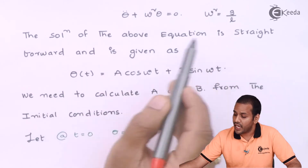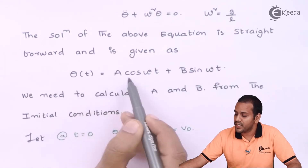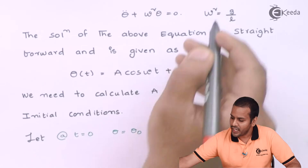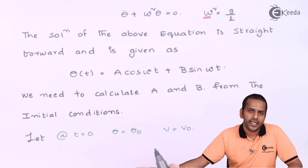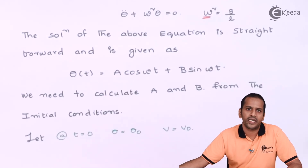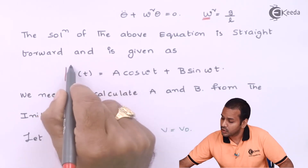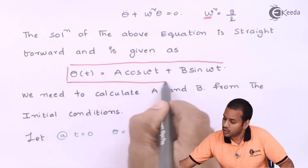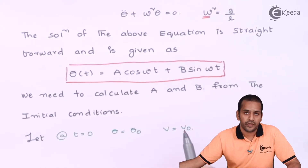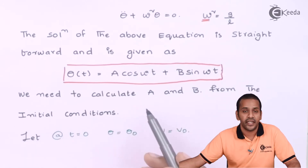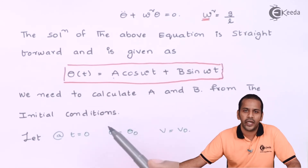The solution is θ(t) = A·cos(ωt) + B·sin(ωt), where ω represents the angular frequency of the oscillating system. This is the solution for the linearized differential equation, but we still need to find the two constants A and B.